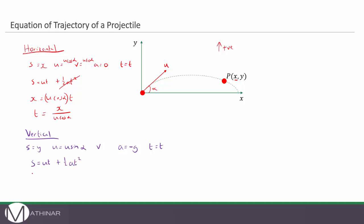s is the value of y, u is equal to u sin alpha multiplied by t plus a half times minus g so that's going to be minus a half g times t squared. Now what we're going to do is we're going to use this formula t is equal to x divided by u cos alpha and substitute that into what we have here.